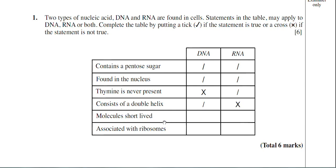Right, molecules short lived. Basically, that means does the DNA or RNA get broken down rapidly and degraded? Well, DNA actually is not short lived. The molecule is long lasting, so that would be a cross there. And RNA is actually short lived because it can get broken down. For example, messenger RNA is only present in the cell when protein synthesis is occurring. So we actually have a tick for that one.